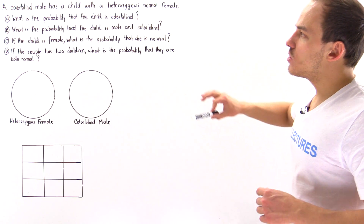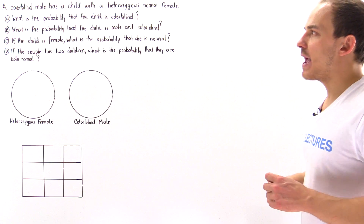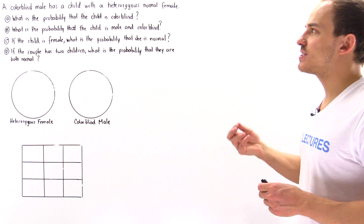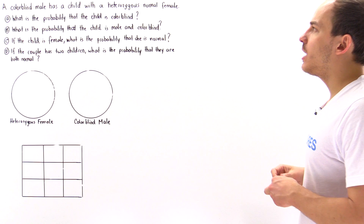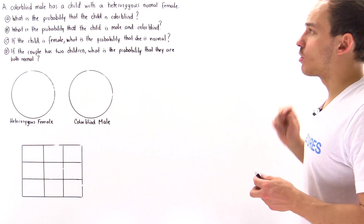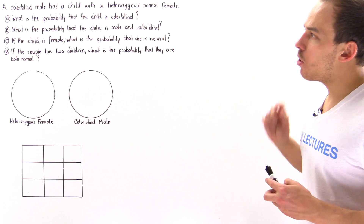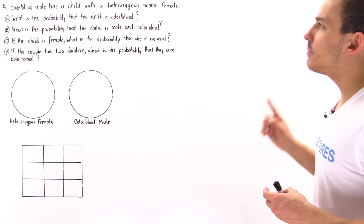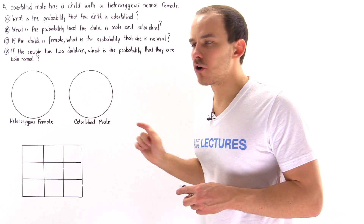Suppose a colorblind male — a hemizygous recessive male — has a child with a heterozygous normal female. In part A, what is the probability that the child is colorblind?